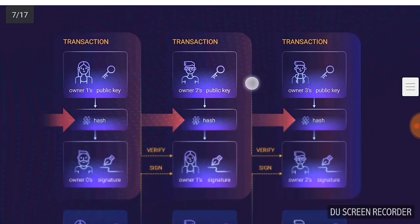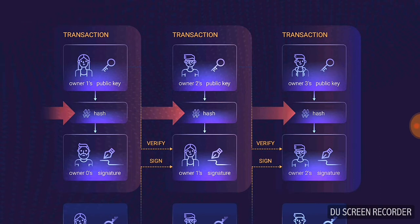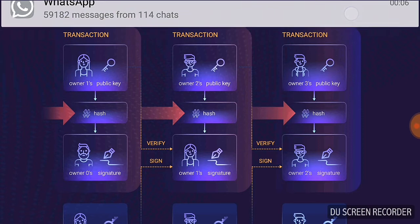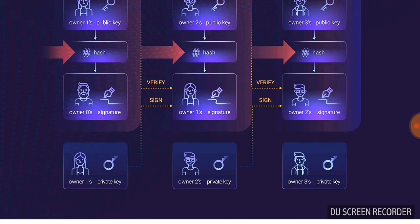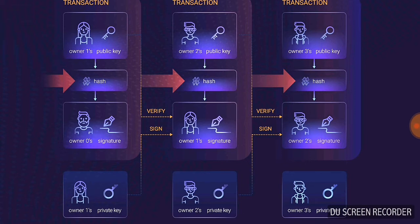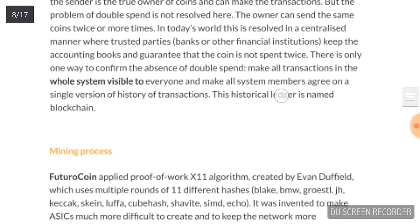Regarding how FutureCoin transactions are secured and fastest — in the transaction diagram, we can see the owner's first key, second public key, and third public key, each verified by the hash rate. Then the owner's signatures are verified by the network. After verifying the signature, it is also verified by the private key. All three — public key, signatures, and private key — are verified by the transaction. The FutureCoin transaction is verified in three ways, making it more secure.